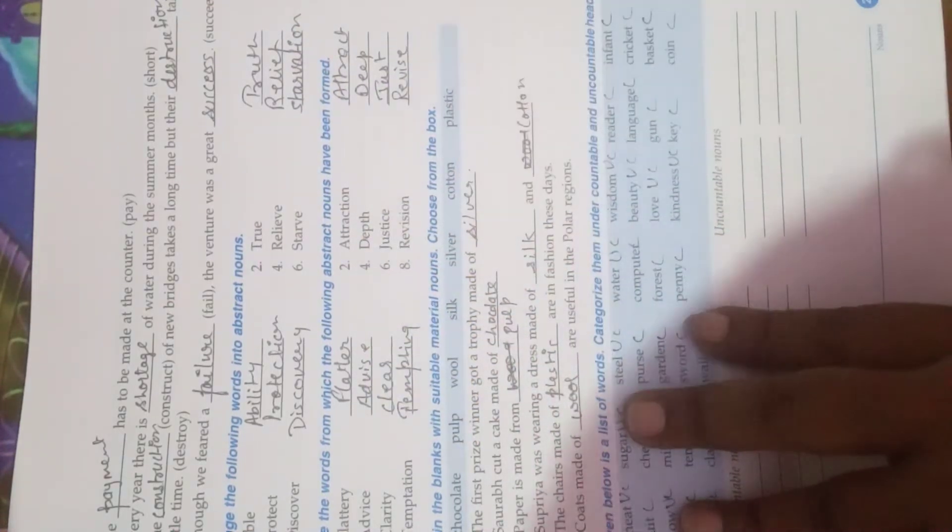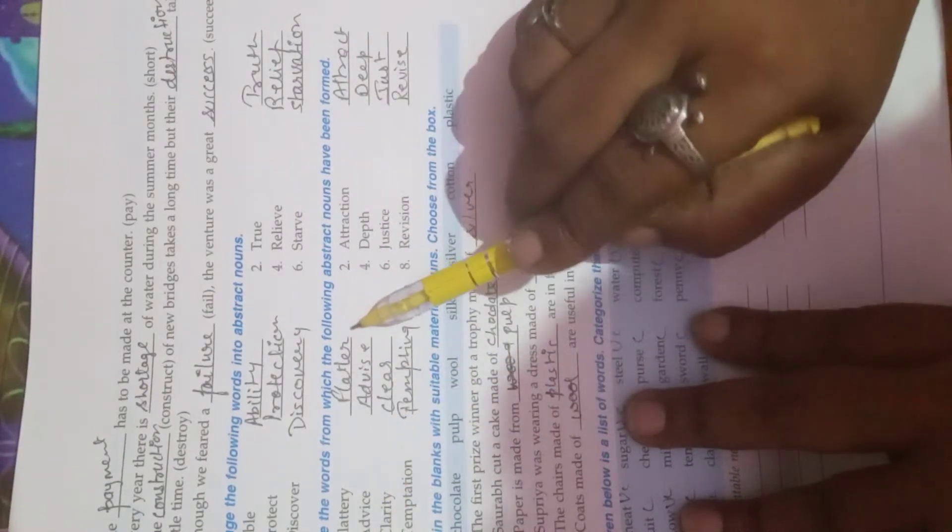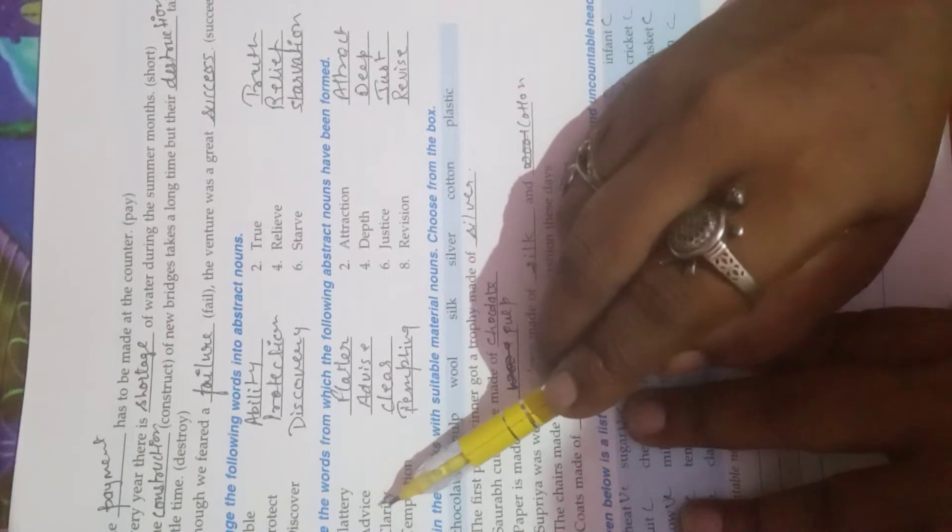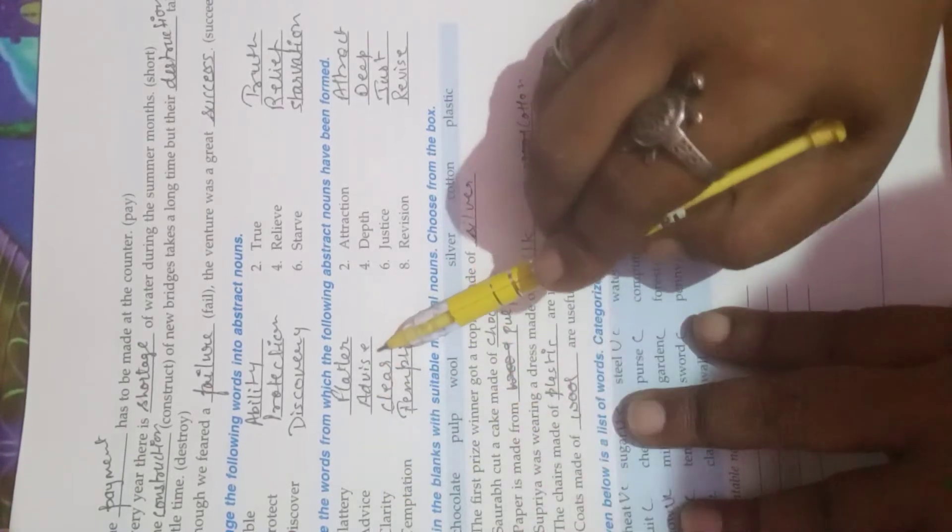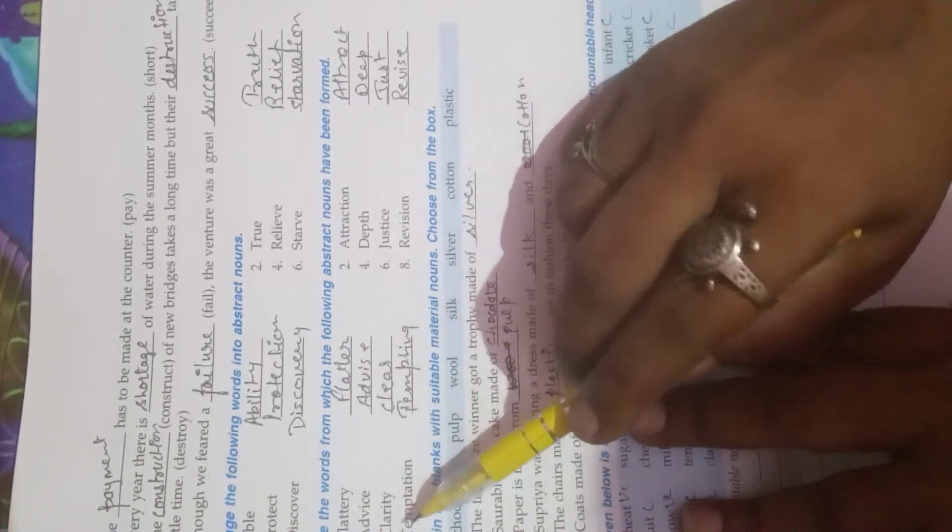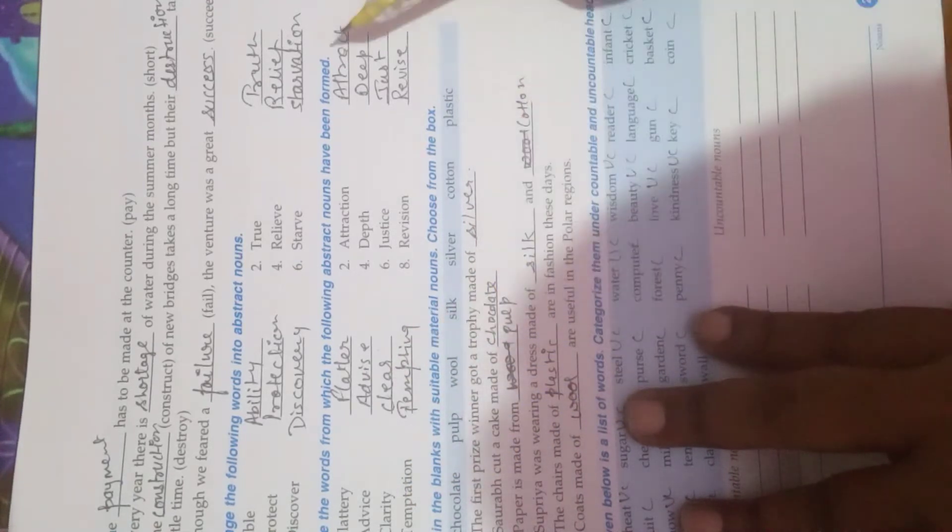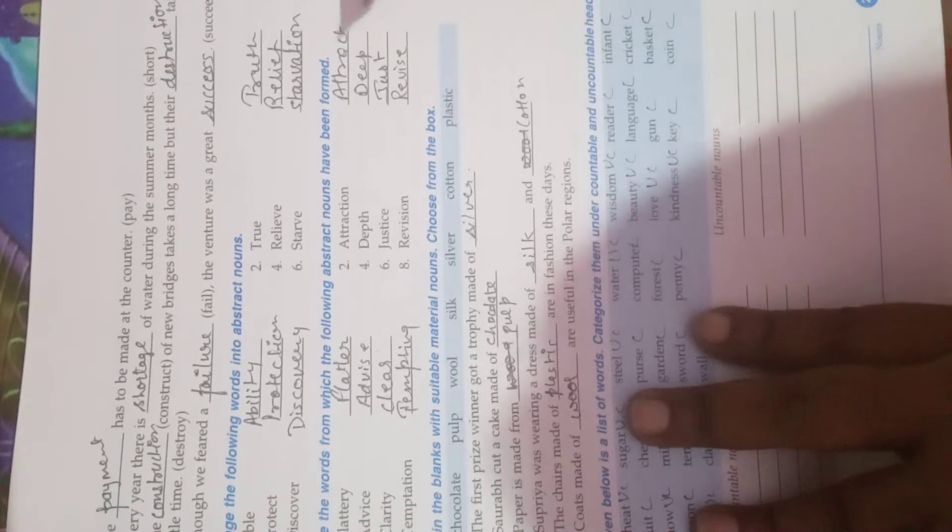Write the word from which the abstract nouns are formed. Flattery, flatter. Advice, advise. Here we have to keep attention, C-E in question, answer is S-E. Clarity, clear. Temptation, tempting. Attraction, attract. Depth, deep. Justice, just. Revision, revise.